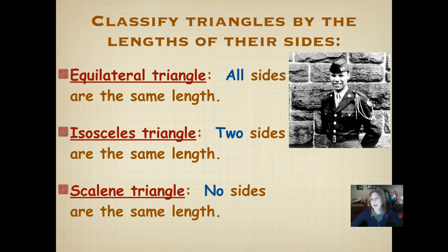We're going to start out by classifying triangles by the lengths of their sides. So let's look at that first term, an equilateral triangle. Equi means the same, and lateral means sides. So equilateral means same sides. That's when all sides of the triangle are the same length, like we were talking about in last night's lesson, when we were talking about a regular triangle where all sides are the same length.